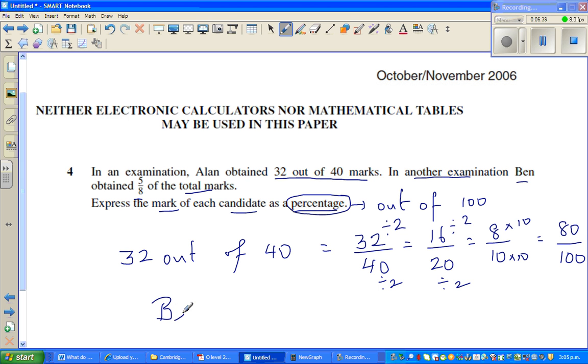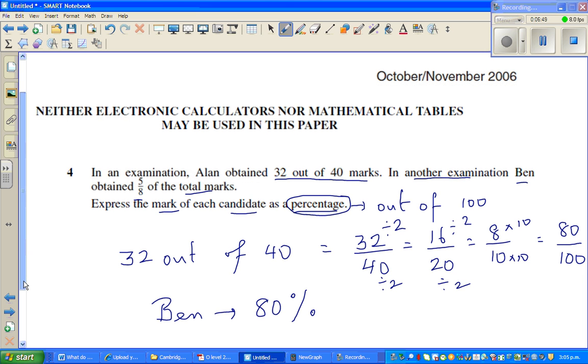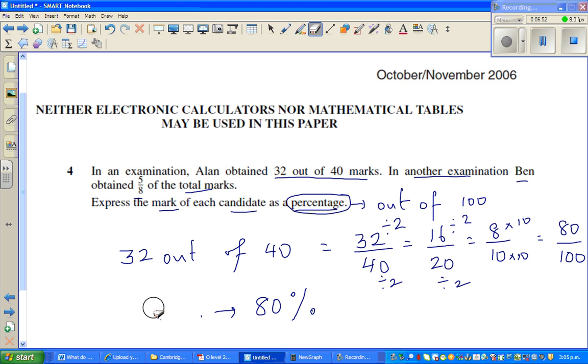So Alan has got 80 out of 100, which is 80 per cent. Just like that.